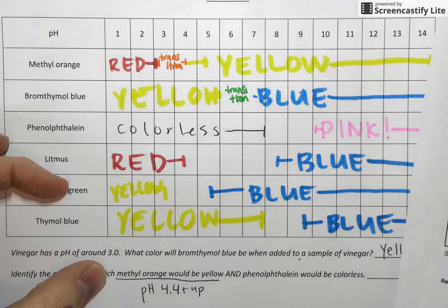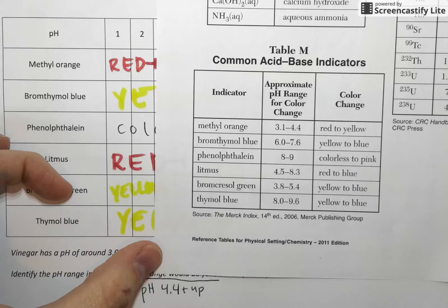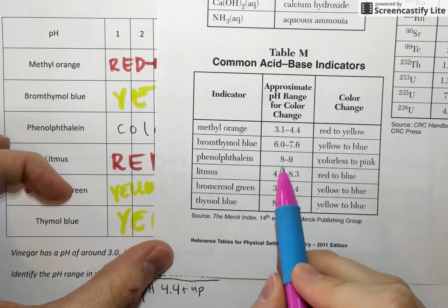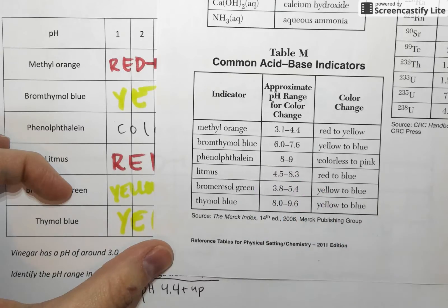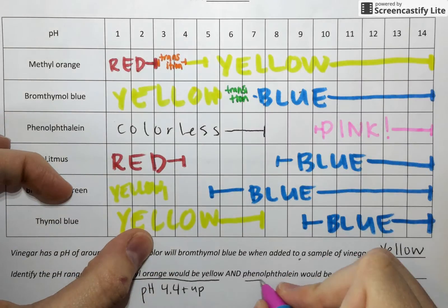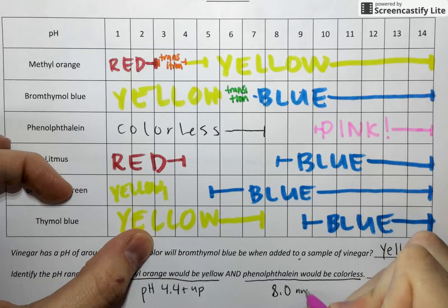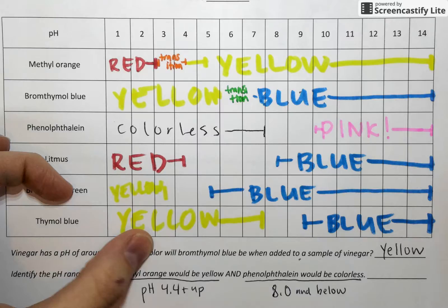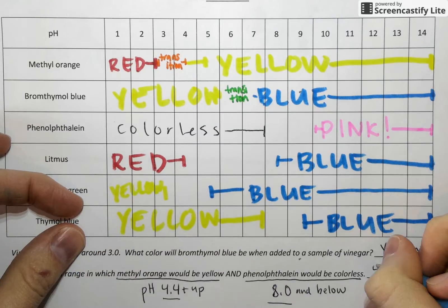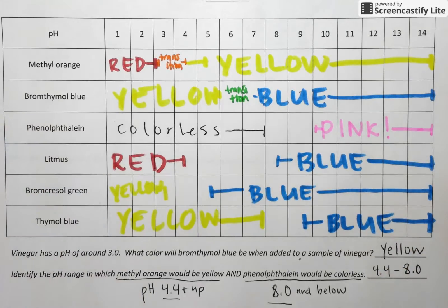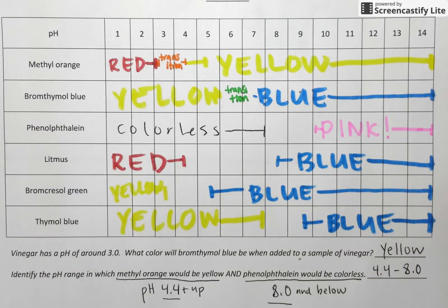If phenolphthalein is colorless, again, we'll look at table M. Colorless is the color on the left. So we've got to be to the left of this color change range. So we need to be below a pH of 8. So phenolphthalein would be colorless at 8.0 and below. So if both these statements are true, we must be between pH 4.4 and 8.0. We could use other indicators to help us get a more precise guess at what the pH of that solution would be, but that's how you use indicator color predictions or for pH range predictions.